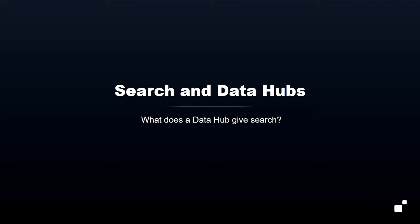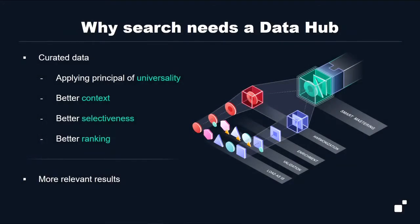We talked about what search is doing for the Data Hub — how search is helping with all this curation. But what does search get from the Data Hub? This is the consumption phase of any data hub project. Data access is search in MarkLogic, period. What does search get from the Data Hub? It gets curated data. Why does it want curated data? Because the data defines the index, the data defines the questions you can ask. By curating it, you are applying the principle of universality with intent to get better context, better selectiveness, better ranking — and bottom line, more relevant results, which is the bottom line for all search applications.